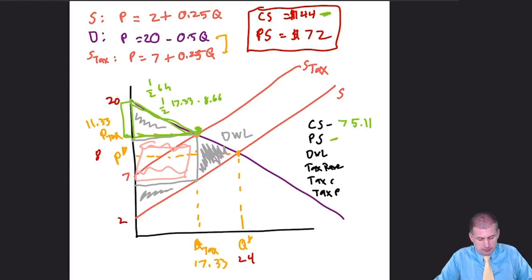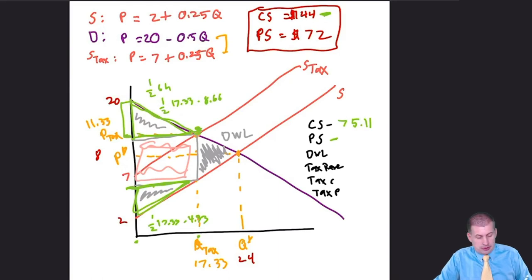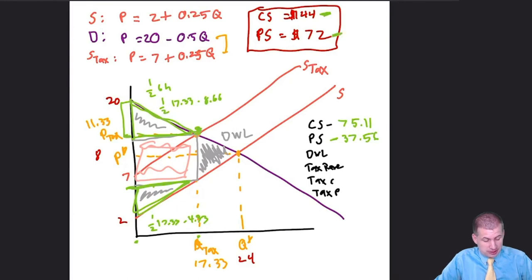For new producer surplus: area = 1/2 × base × height. The base goes from 0 to 17.333. The height goes from 2 up to the new supply-curve price at that quantity, which is 6.333, so height = 4.333. Calculating 1/2 × 17.333 × 4.333 = $37.56. That is down from $72 before the tax — a large chunk of efficiency lost.